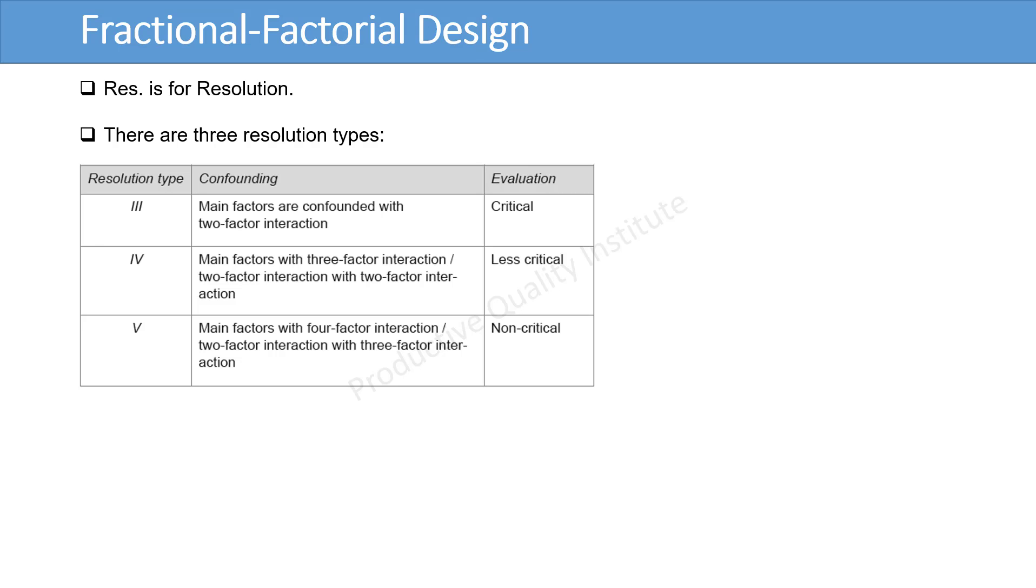Resolution 3, 4, and 5 designs are most common. Resolution 3: Main effects are aliased with two factor interactions. Critical evaluation. Resolution 4: Some two factor interactions are aliased with other two factor interactions. And main effects are aliased with three factor interactions. Less critical evaluation. Resolution 5: Two factor interactions are aliased with three factor interactions. And main effects are aliased with four factor interactions. Non critical evaluation.